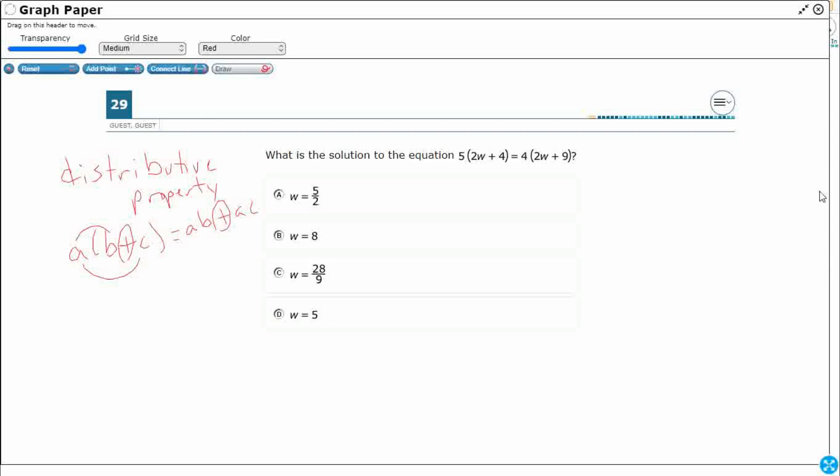Right, so that's exactly what we have going on right here. Okay, so we've got this 5(2W + 4). Okay, so let me just take that one first. So we're going to take this 5. This is sitting in the A position. Okay, so we're going to distribute it out to both. So I'm going to take it to the 5 and the 2W.